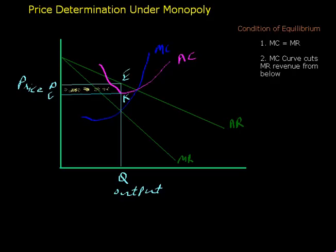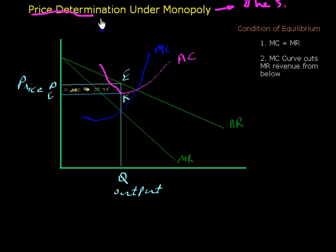Today we are explaining the price determination under monopoly. Monopoly is that situation of market in which there is only one seller who sells goods to a large number of buyers. So for price determination or equilibrium, there are conditions we need to examine.